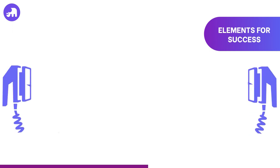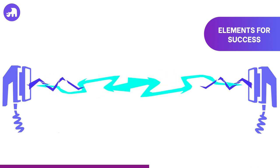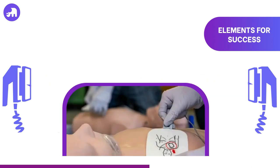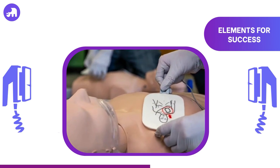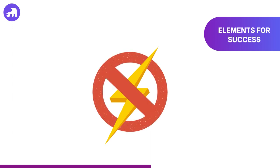Elements of successful defibrillation. In addition to appropriate pad size and position, there are other factors to consider when preparing to defibrillate a victim. Above all, it is important to make sure that the pads are completely adhered to the victim's skin. Air pockets or gaps between skin and the pads can lead to the possibility of arcing and burns. To avoid this, apply one edge of the pad securely to the patient and roll the pad smoothly from the applied edge to the other, being careful not to trap any air pockets between the pad and the skin.